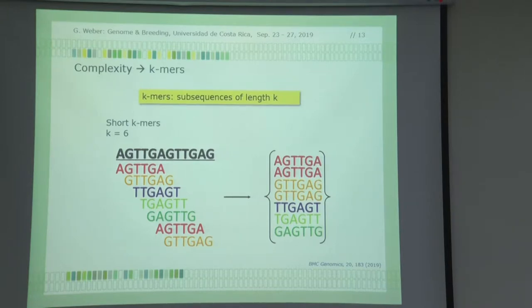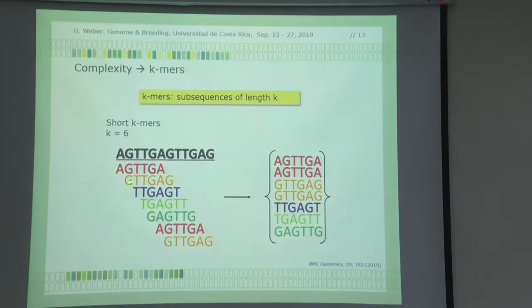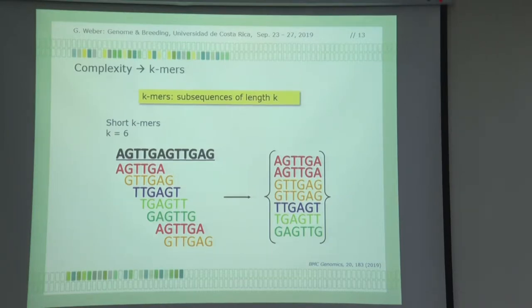They're not random. Here's a sequence — we look at a short K-mer of six. The first K-mer is six bases: A-G-T-T-G-A. The second K-mer overlaps by one position, and so on — it's an overlapping sequence broken down in smaller proportions. This is apparently doable with the computers we use, so you break down the whole package into K-mers.